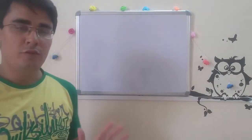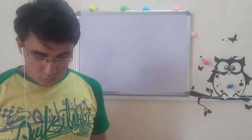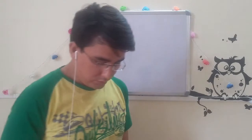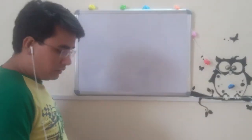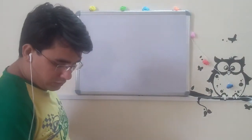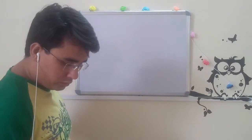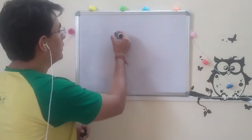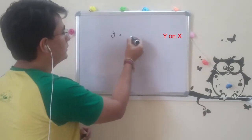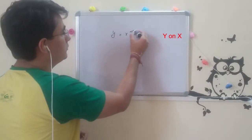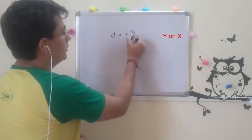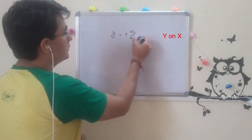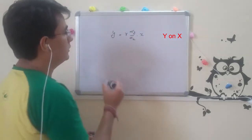I will be going ahead with the formula itself. There are two ways of finding the formulas. First one is regression equation of y on x. The formula is y = r * (sigma y / sigma x) * x.